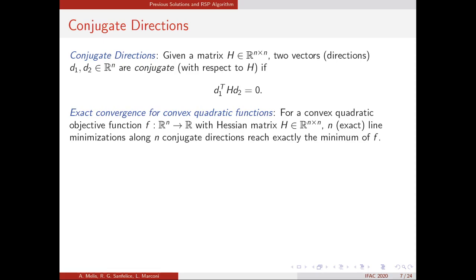Conjugate directions have a wonderful property: for a convex quadratic cost function f with Hessian H, considering a set of n conjugate directions with respect to this matrix, computing n exact line minimizations along these n directions reaches exactly the minimum of this convex quadratic cost function. By 'exact' we mean that along the lines defined by the conjugate directions, the minimum is found exactly, non-approximately.